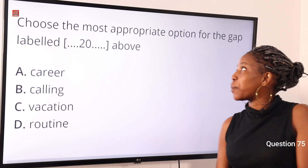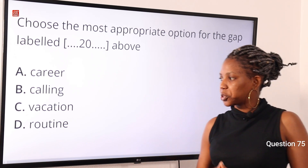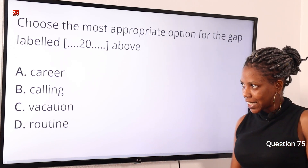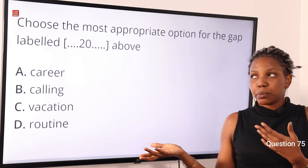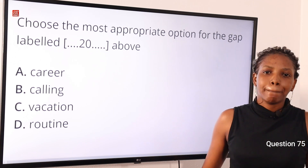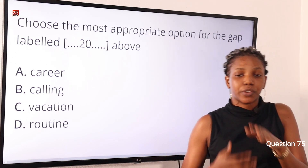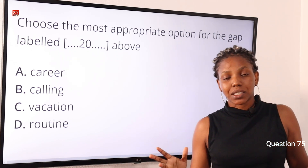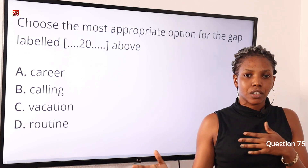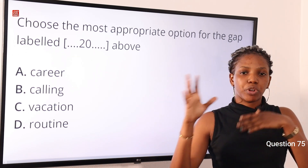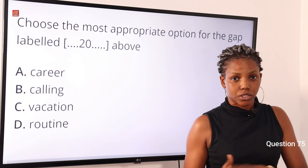Question 75: Choose the most appropriate option for the gap — option A: career, option B: calling, option C: vacation, option D: routine. The answer is option A, career. The beginning of the sentence talks about many boxers who get brain damage as a result of several punches directed towards a particular part of their face during their career. It gives us the overall feeling of a boxer's career. So option A is the correct answer.